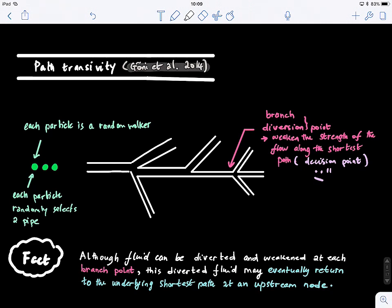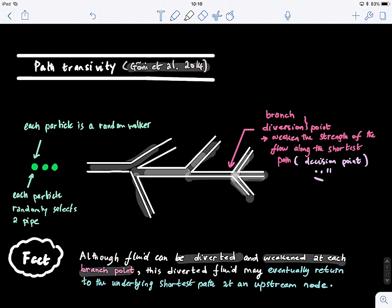If you guys remember the diffusion of a fluid through different pipes or channels — one thing to observe is that although the fluid can be diverted and weakened at each branch point, this diverted fluid, after each branching point, may eventually return to the underlying shortest path at an upstream node.